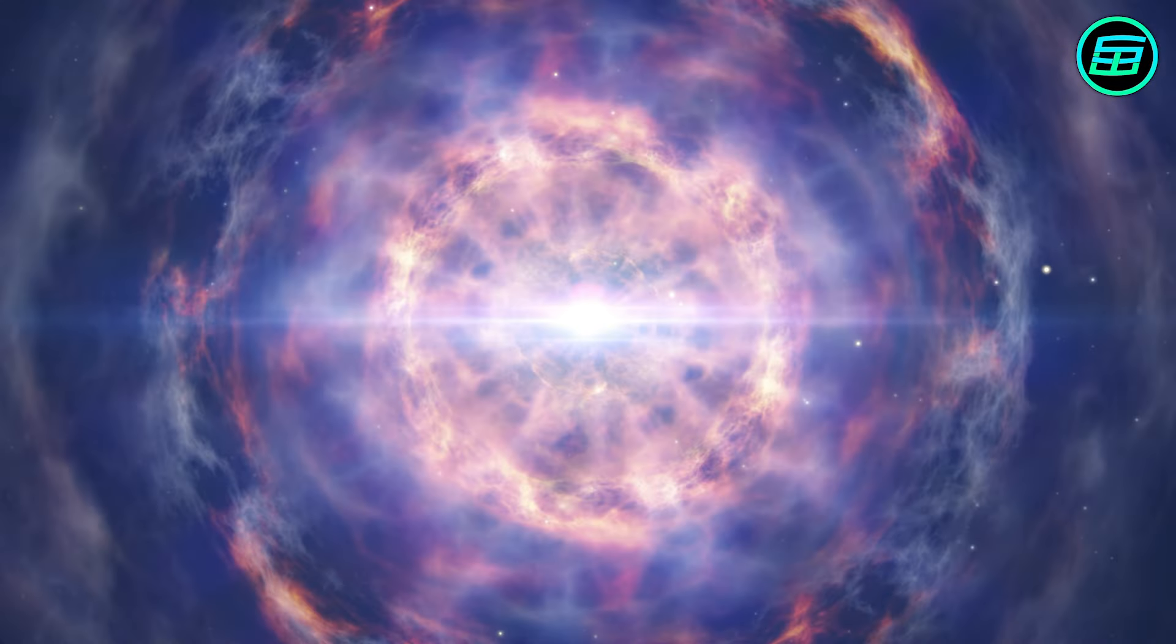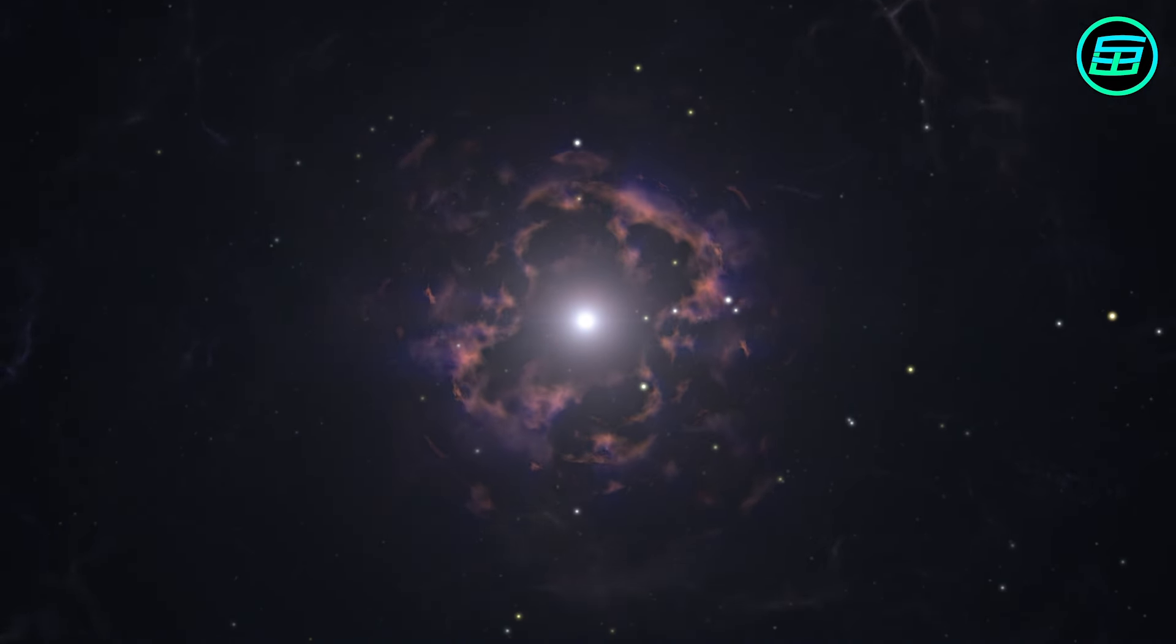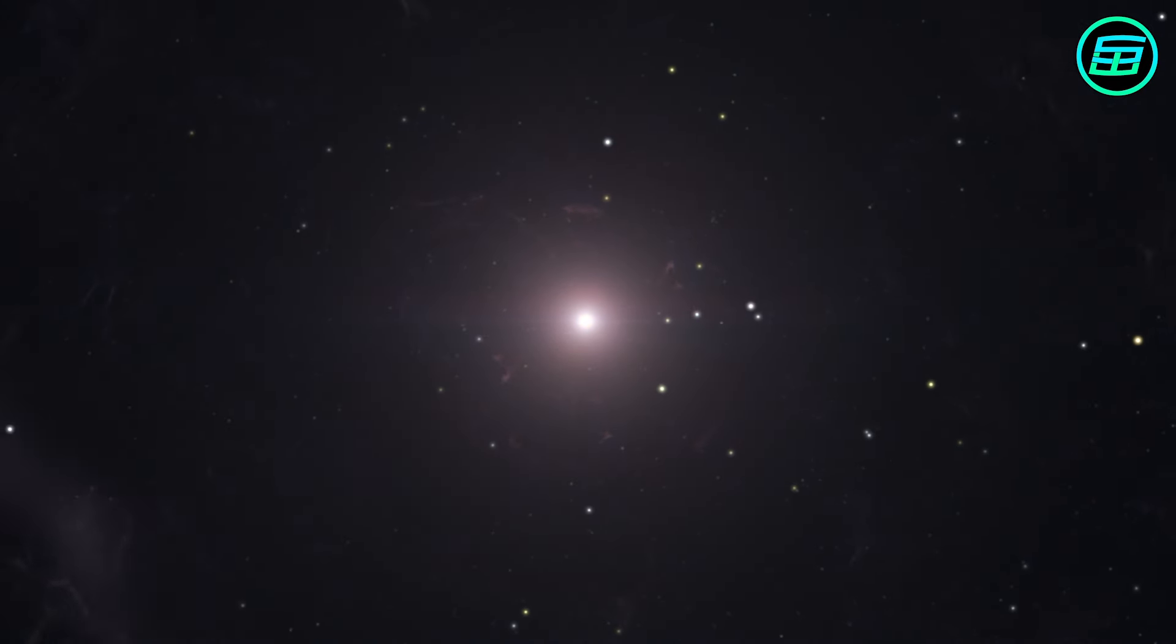What's left, the remains of the collapsed stellar core, can take one of two forms. In the first, the protons and electrons of the old star are squeezed together so hard that they form neutrons. The whole star becomes a ball of neutrons about 20 kilometers wide: a neutron star.